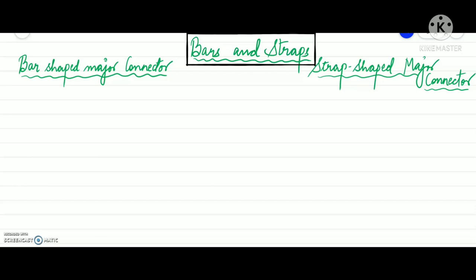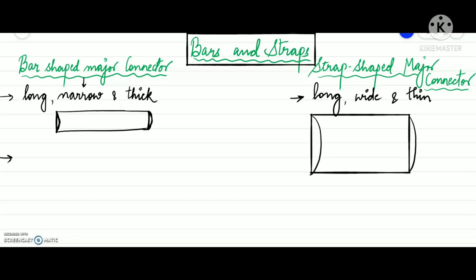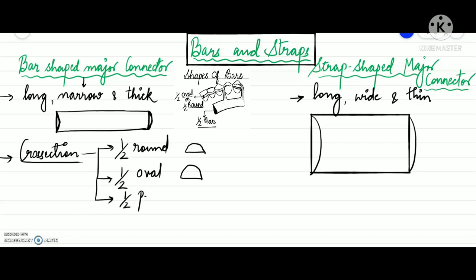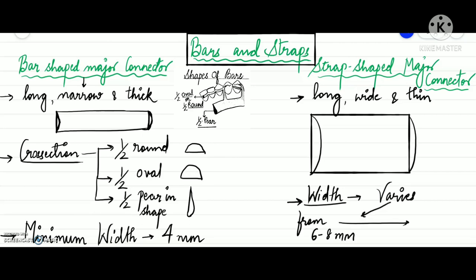A bar-shaped major connector is long, narrow, and thick. In cross section, bars are half round, half oval, or half pear in shape. The minimum width of a bar is 4 millimeters, but they must usually be wider than this to provide adequate rigidity. Whereas a strap or plate-shaped major connector is long, wide, and thin, with width varying from 6 to 8 millimeters to the entire length of the palate.